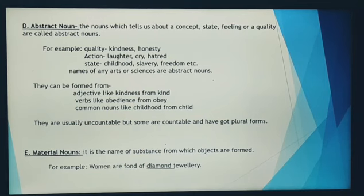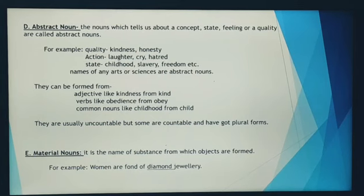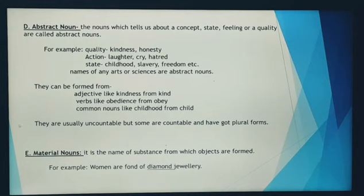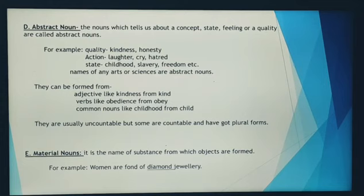Abstract nouns can be formed from various adjectives, like kindness from the adjective kind, or from any verb like obedience from the verb obey, or from any common noun like childhood from the common noun child. Abstract nouns are usually uncountable, but some are countable and have plural forms — for example, feeling, feelings, thought, thoughts, etc.